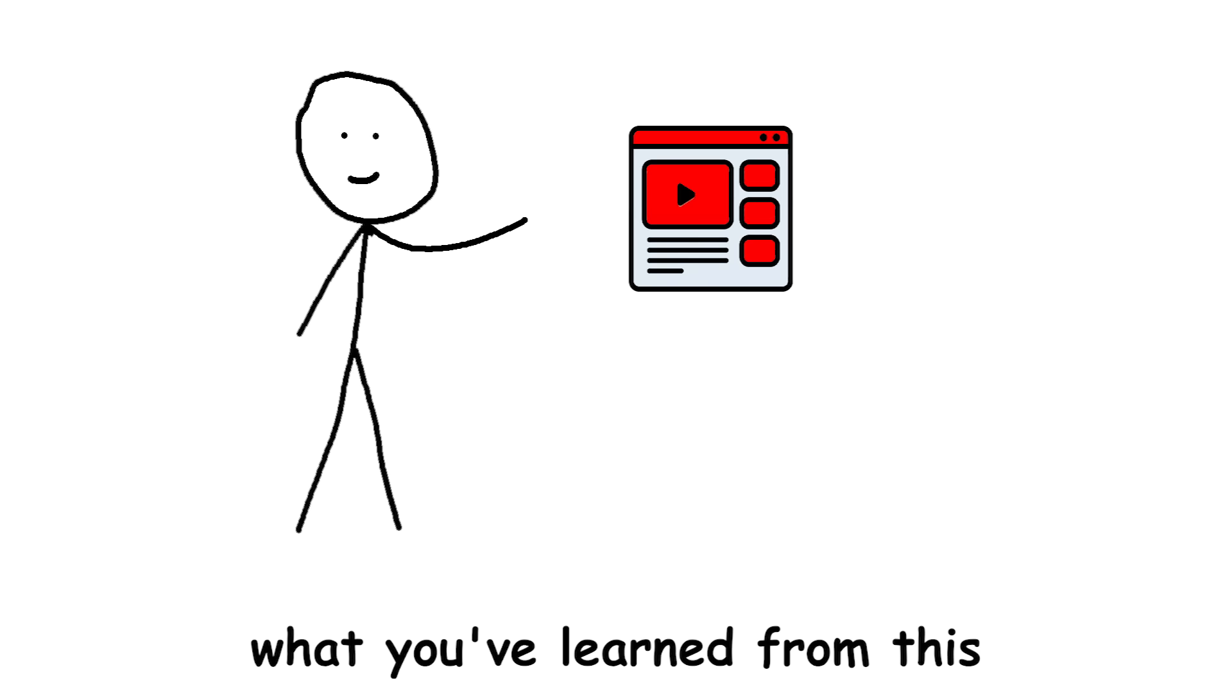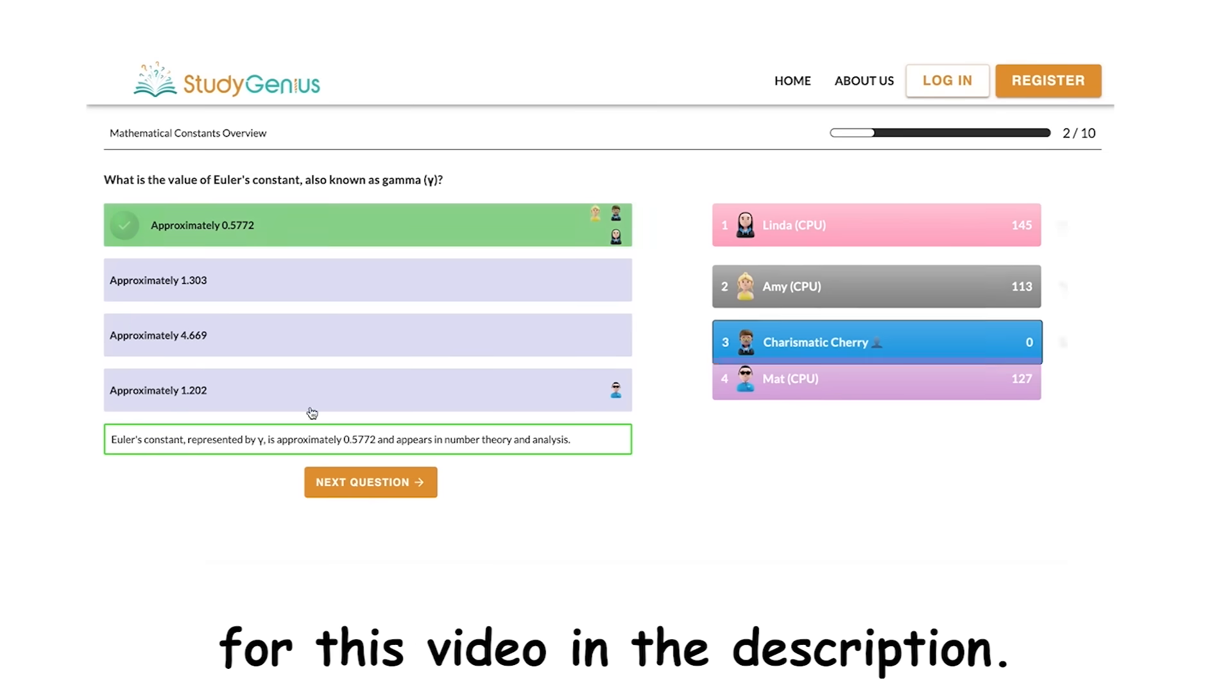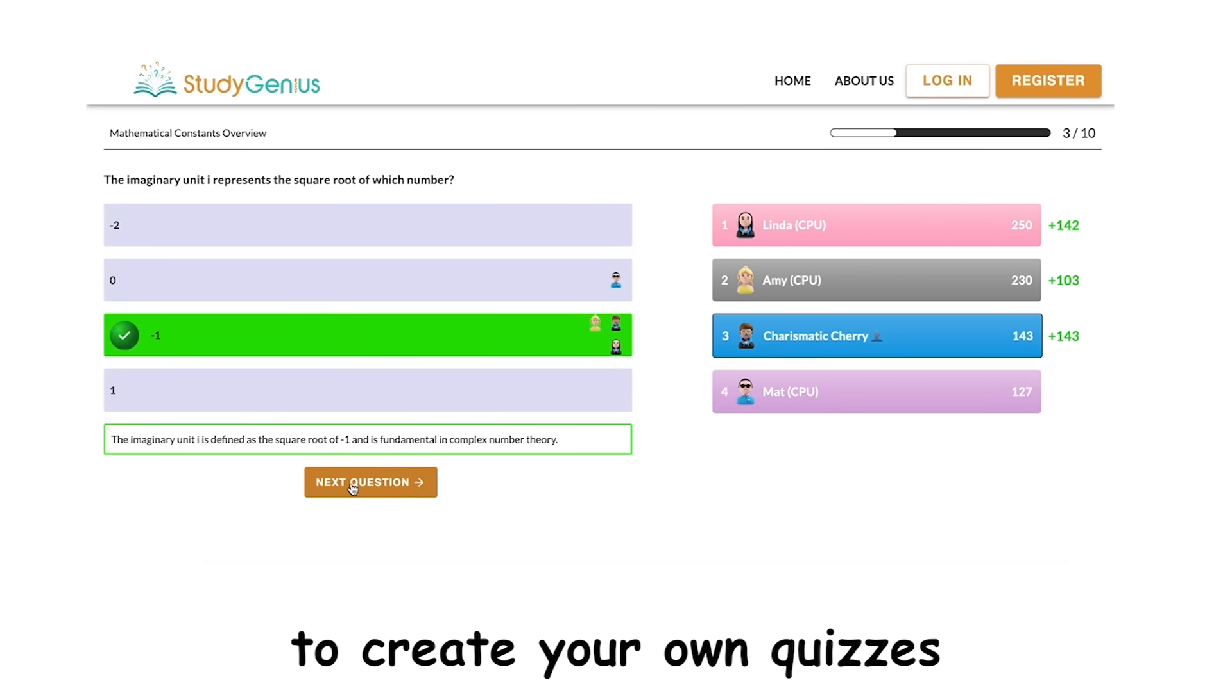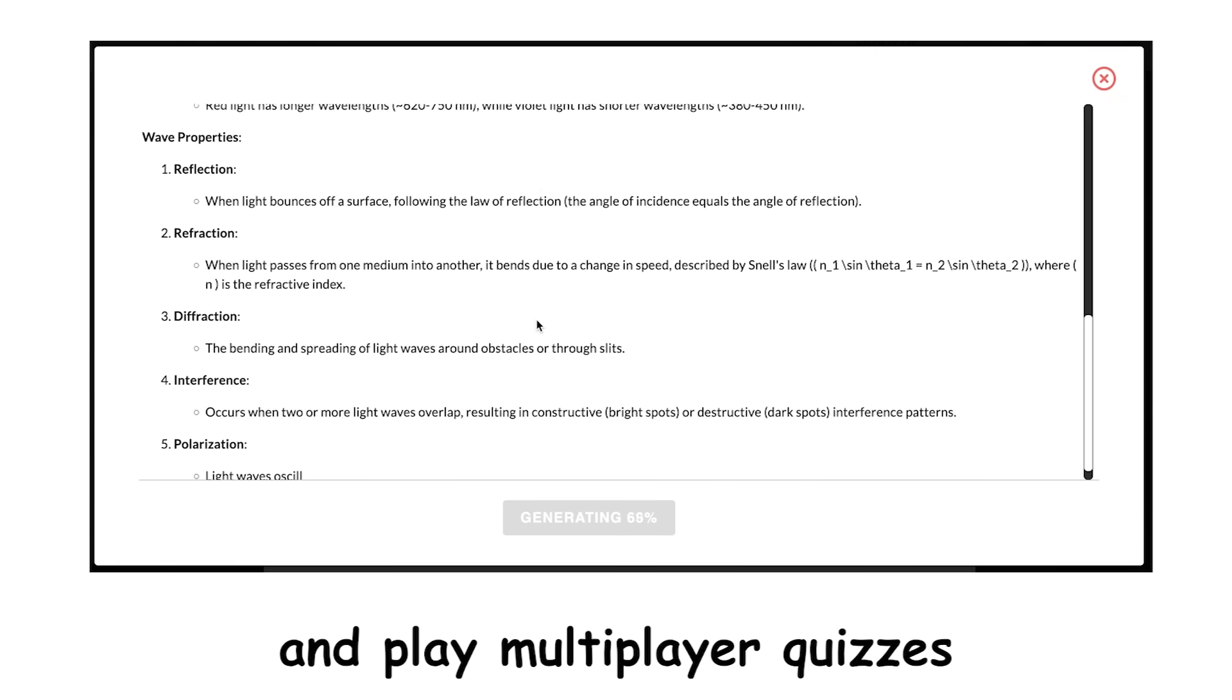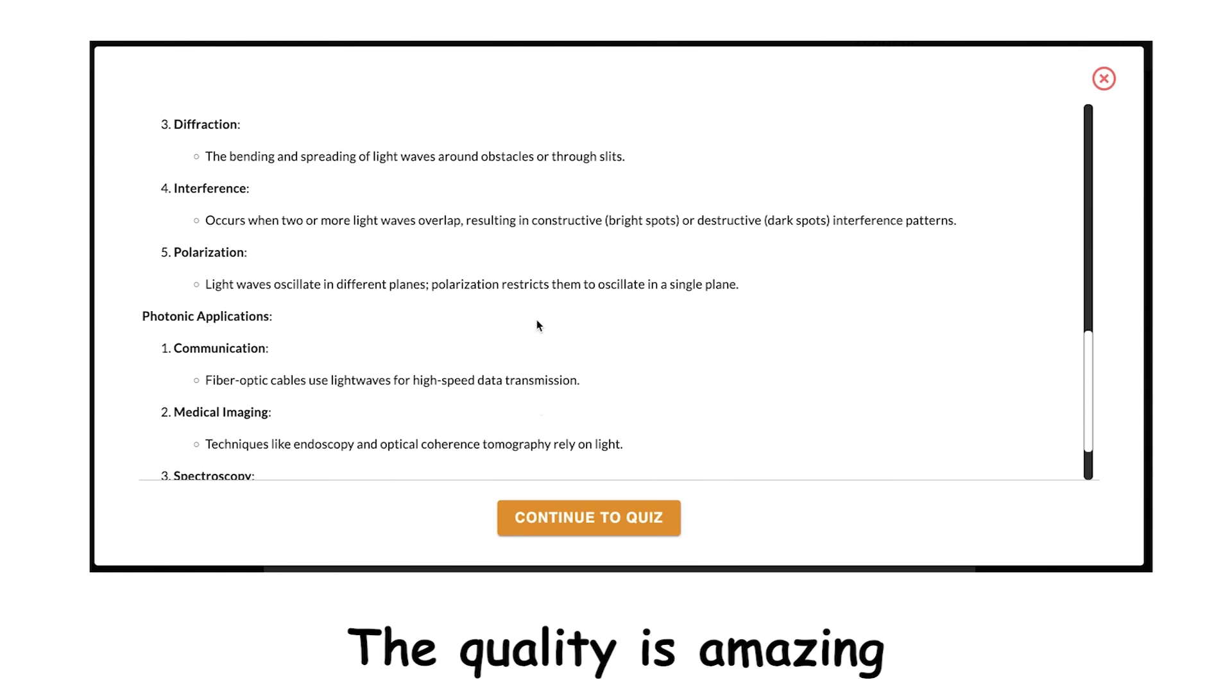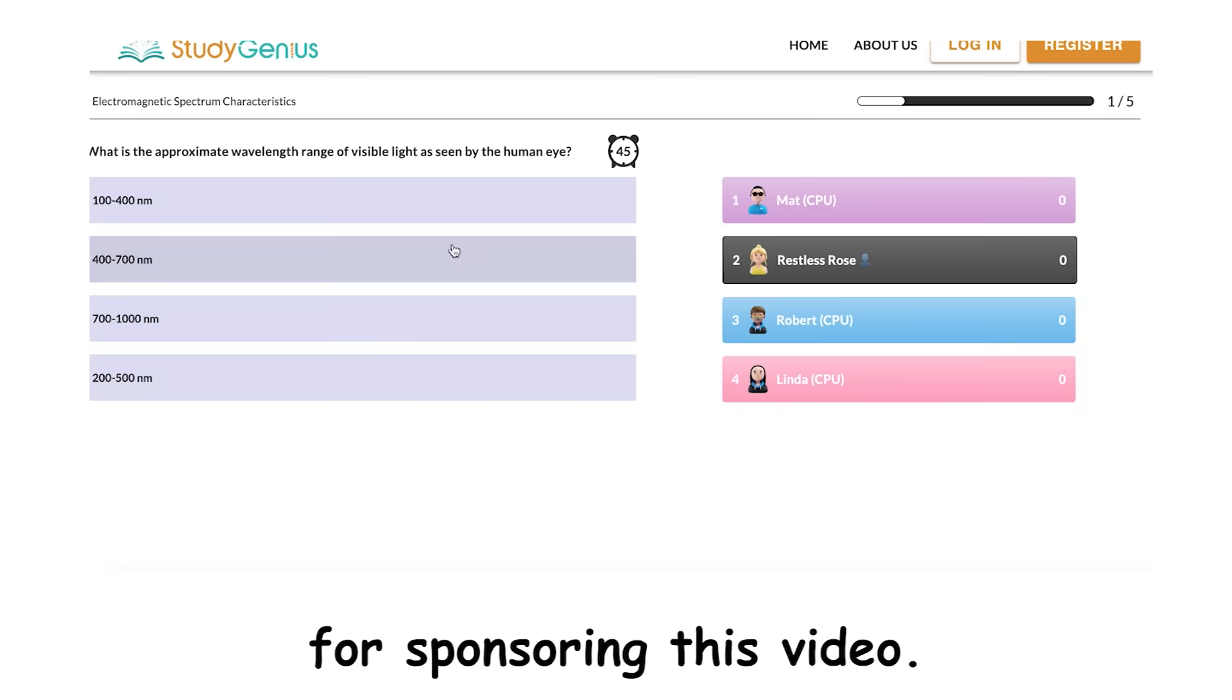If you want to remember what you've learned from this or any other video, head over to studygeniuspro.com to quiz yourself. I've included a quiz for this video in the description. If you complete the quiz with 70% or more correct answers, you'll be able to create your own quizzes using auto-generation and summaries for absolutely free, without needing to sign up. You can create and play multiplayer quizzes from any text, article, or YouTube video. The quality is amazing, and I have tried it myself before recommending to you guys. Thank you to studygeniuspro.com for sponsoring this video.